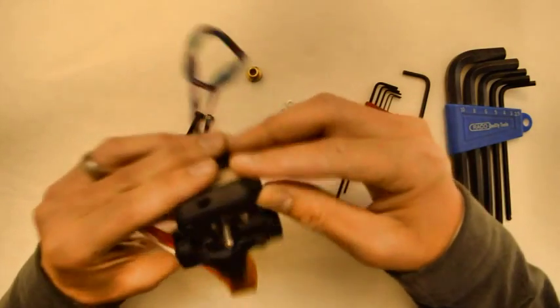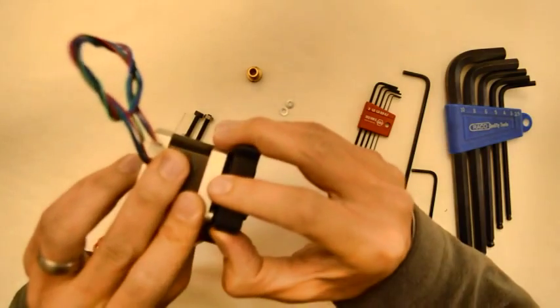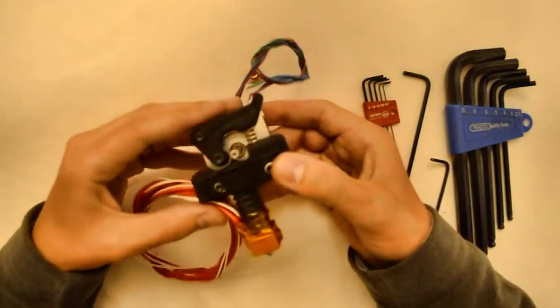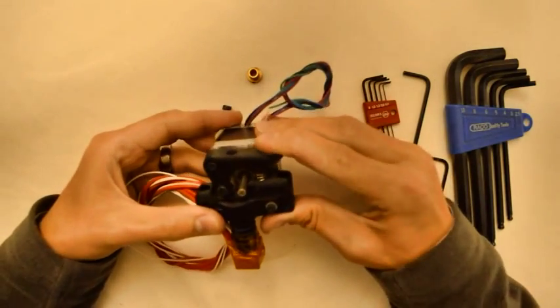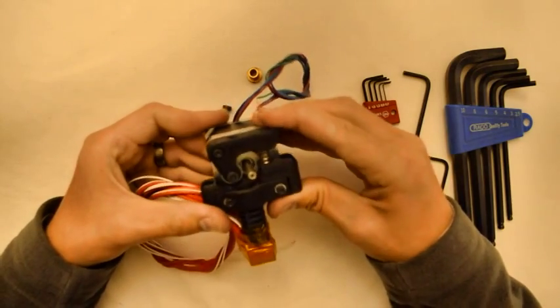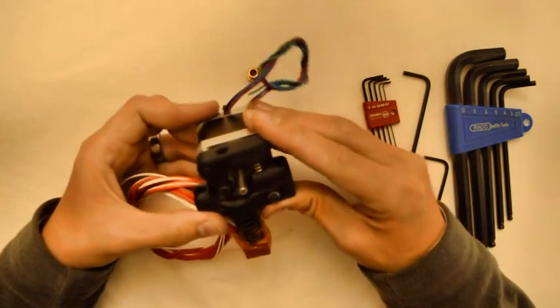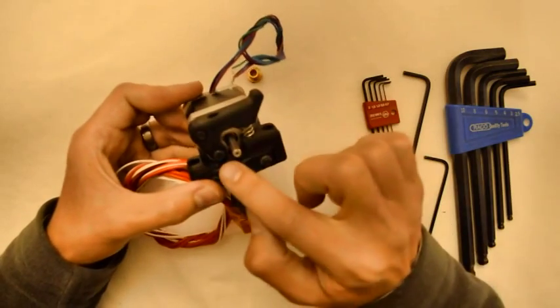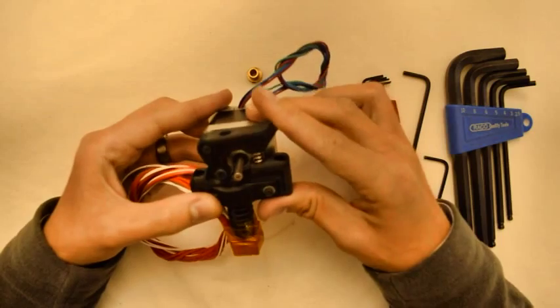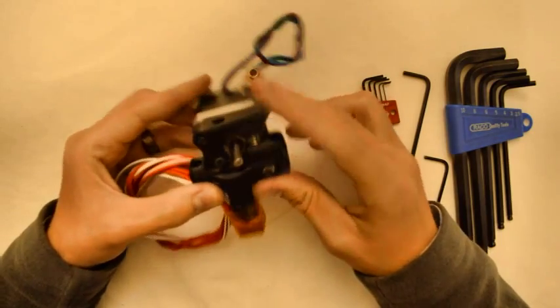But it shouldn't have too much play. This one might have a bit too much play, so I'll add those two washers as well. Okay, so at this stage the extruder looks like this. The lever can move like that, and the spring pushes it back so that the bearing pushes against the shaft of the stepper motor.